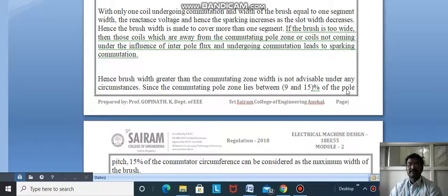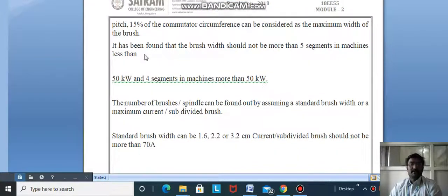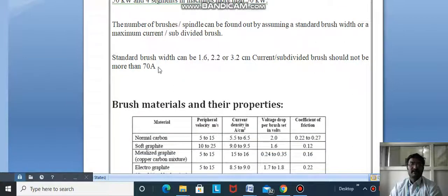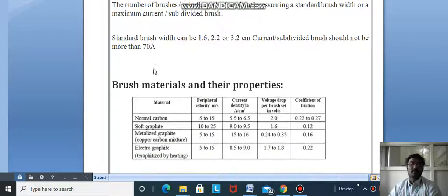It has been found that brush width should not be more than 5 segments in machines less than 50 kW, and 5 segments in machines more than 50 kW. Standard brush width can be 1.6, 2.2, or 3.2 cm. Current per subdivided brush should not be more than 70 amps.